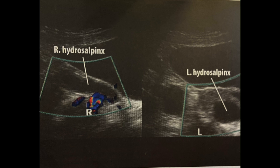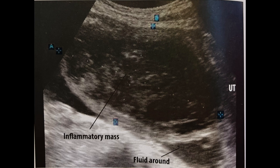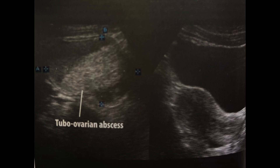As the infection worsens, peri-ovarian adhesions may form with the fusion of an inflamed, dilated tube and ovary. This is called tubo-ovarian complex, which can be seen on ultrasound. Further progression results in a complex, multi-loculated mass with irregular margins and scattered internal echoes — this is labeled tubo-ovarian abscess.